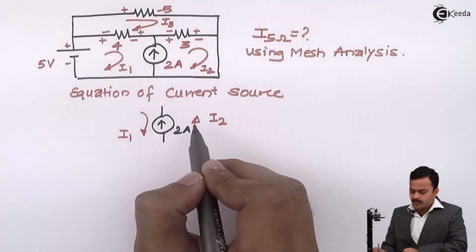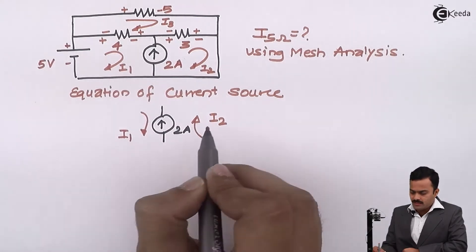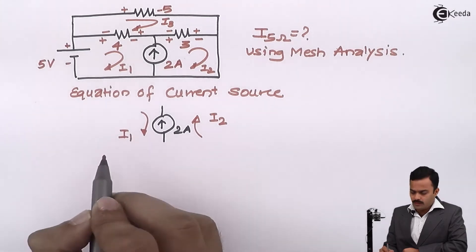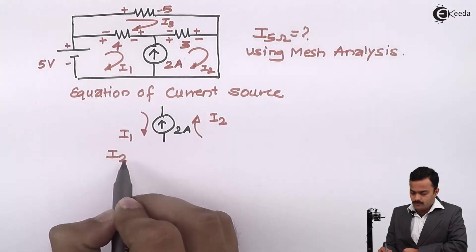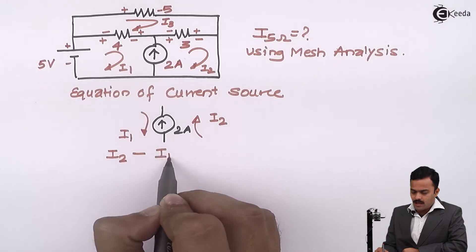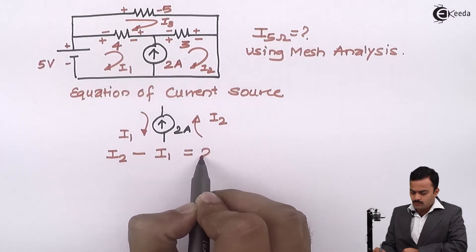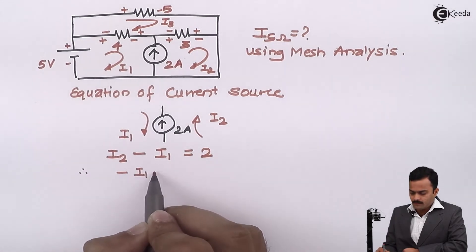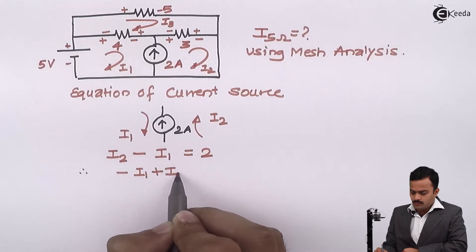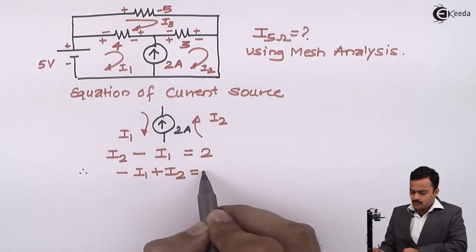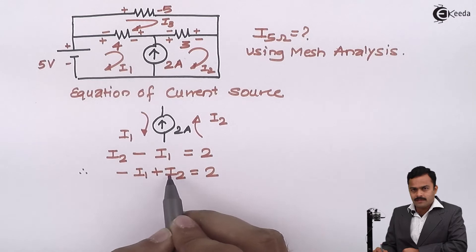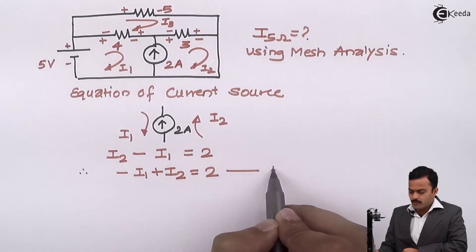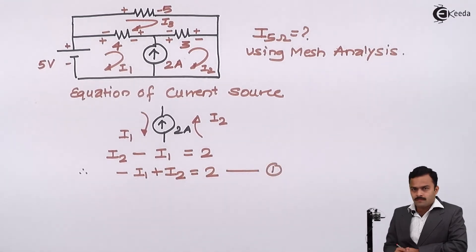The current source is having upward direction. So obviously, I2 is more than I1. So I can say I2 minus I1 equal to 2. Let's rearrange the terms properly, meaning first I will write I1 and then I2. So ultimately, minus I1 plus I2 equal to 2, equation number 1.